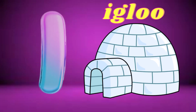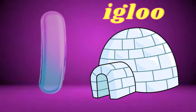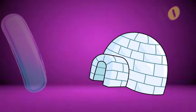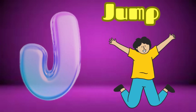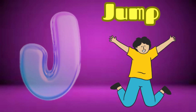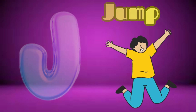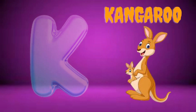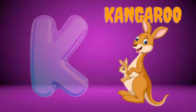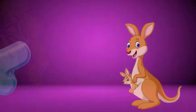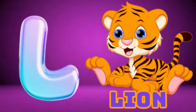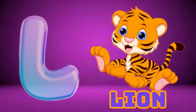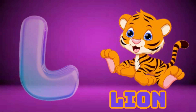I is for Igloo, I-I-Igloo. J is for Jump, J-J-Jump. K is for Kangaroo, K-K-Kangaroo. L is for Lion, L-L-Lion.